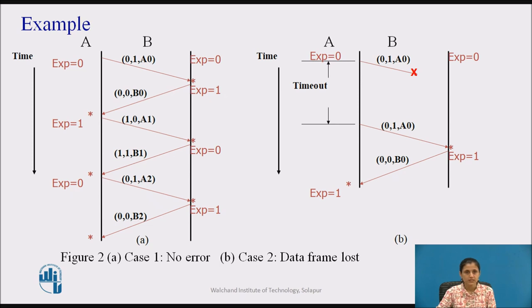In Figure 2a, case 1 shows the normal operation of the protocol. In Figure 2b, case 2 shows the situation if a data frame gets lost. The protocol retransmits the frame after a timeout. After sending a frame, the sender starts a timer. If the frame gets lost in transit, the sender will not receive the acknowledgement, so after the timeout, the frame is retransmitted.